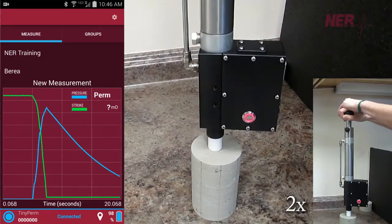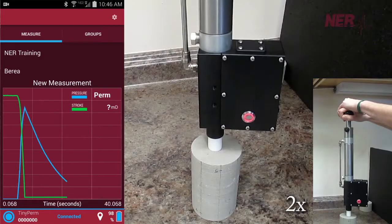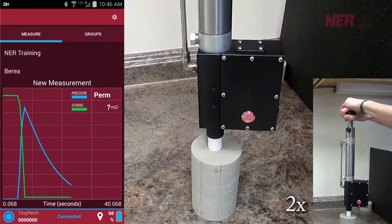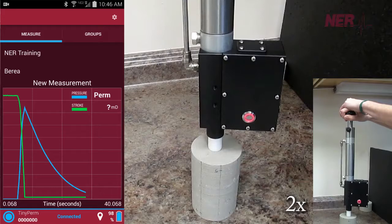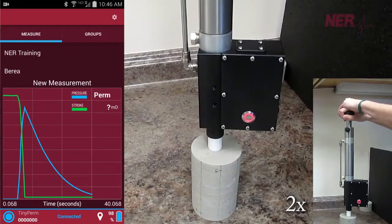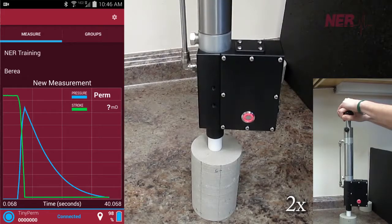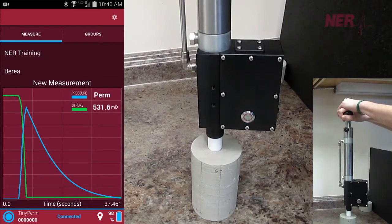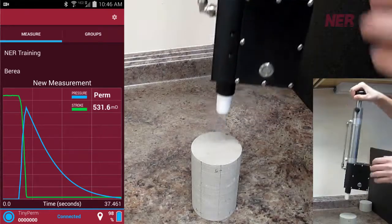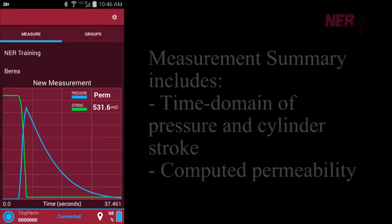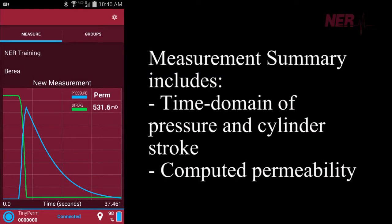A plot shows the time domain pressure and volume data in real time as a measurement is taking place. A final plot displays this information as well as the computed permeability. Measurements are automatically stored and catalogued on the Android device.